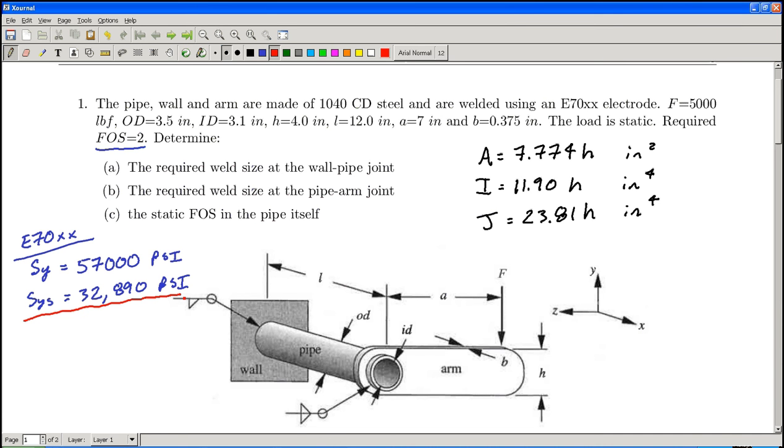The weld symbols here, we just have a fillet weld all the way around that location, and then between the arm and the pipe, it's also a fillet weld, but it's on both sides of the weld. So it's going to double the material properties there.